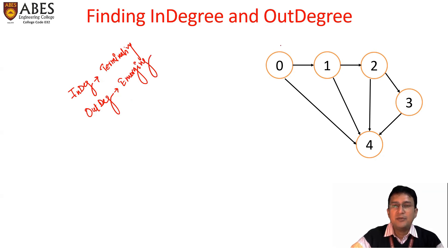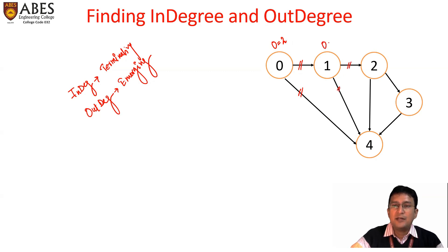If I talk about vertex number zero, there are two edges emerging from vertex number zero. So I will say that the outdegree of vertex number zero is equal to two. For vertex number one, there are two edges emerging, so the outdegree of vertex number one is also equal to two.